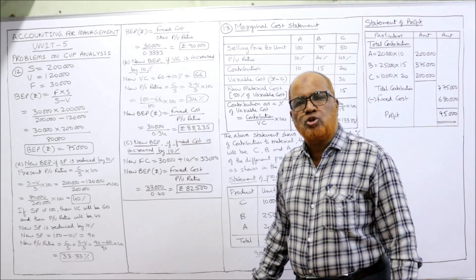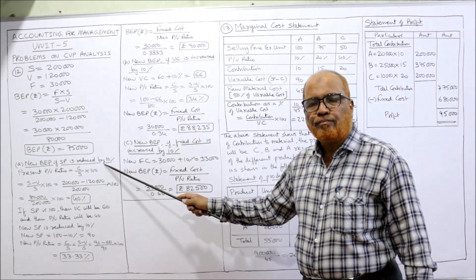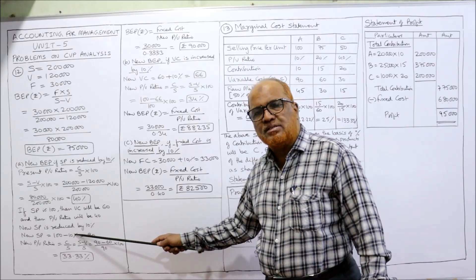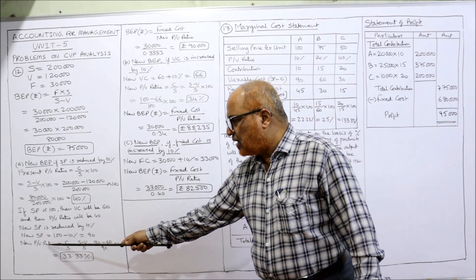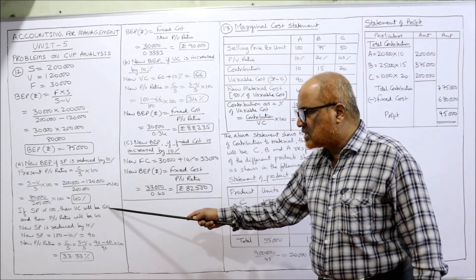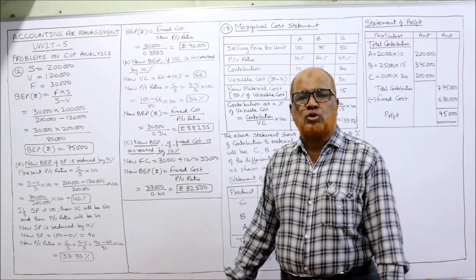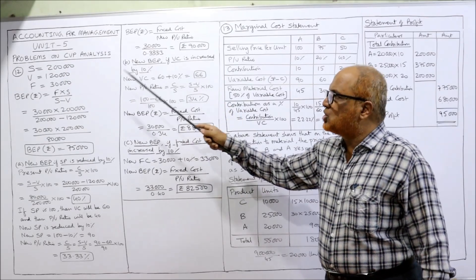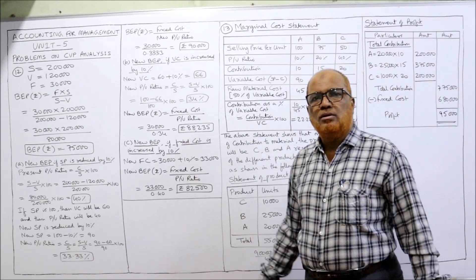If selling price is 100 and variable cost is 60, and selling price is reduced by 10%, the new selling price becomes 90. New PV ratio = (90 − 60) ÷ 90 × 100 = 33.33%. New BEP = Fixed Cost ÷ New PV Ratio = 30,000 ÷ 0.3333 = 90,000. The BEP has risen from 75,000 to 90,000 because the selling price was reduced.